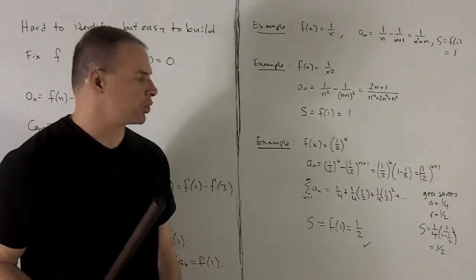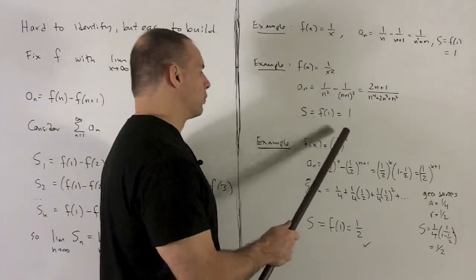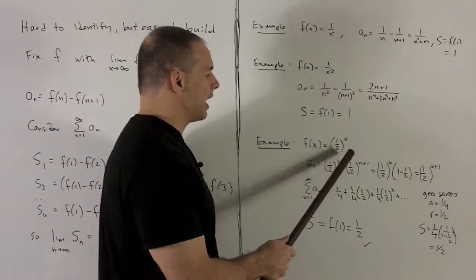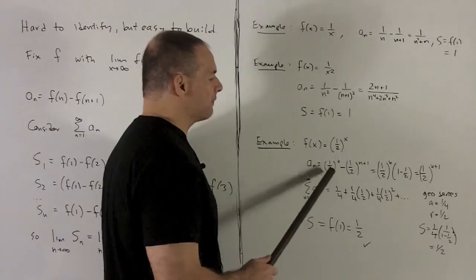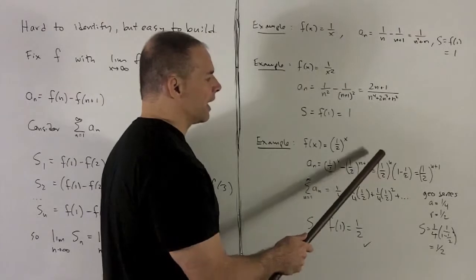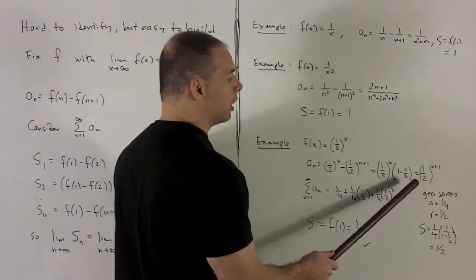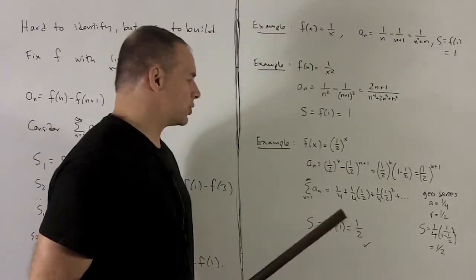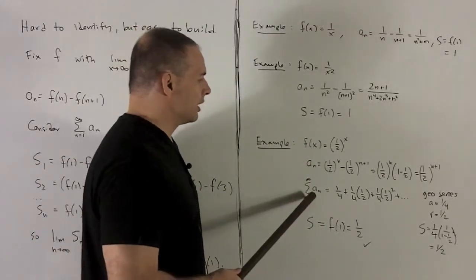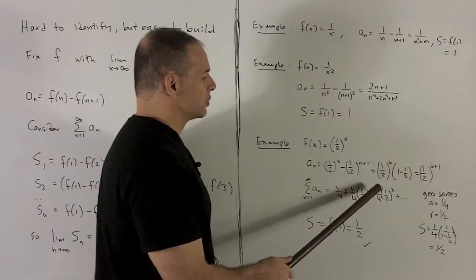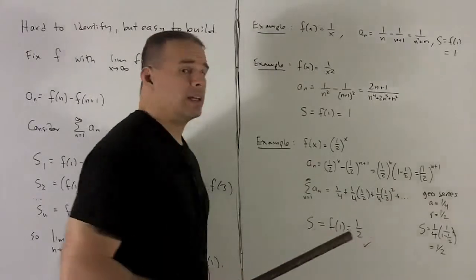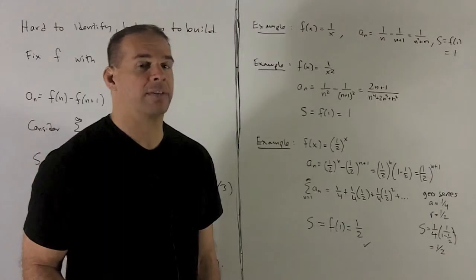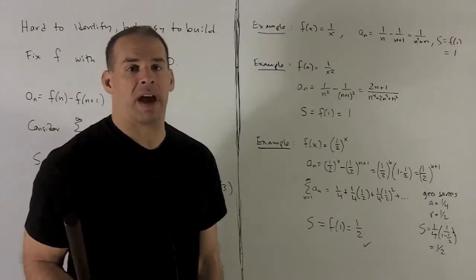Final one that's slightly interesting. Take f of x equal to 1 half raised to the x power. Our a sub n is going to be equal to 1 half to the n minus 1 half to the n plus 1. I could factor a half to the n out of this, which leaves me with a half to the n, then 1 minus a half, or a half to the n plus 1. So I write out the first few terms of the series. It's going to give me a quarter plus a quarter times a half, plus a quarter times half squared, and so on. So I notice that this is a geometric series with a equal to a quarter and r equal to a half.